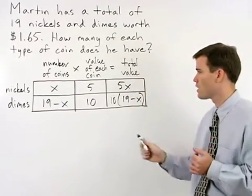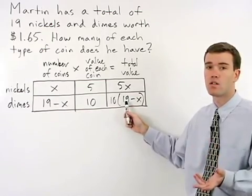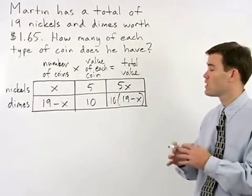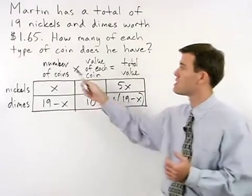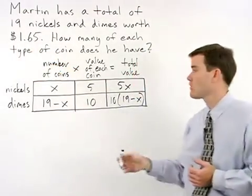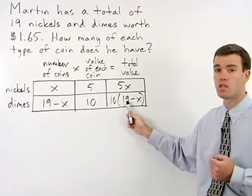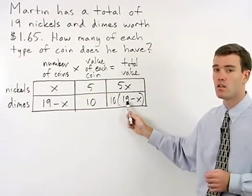So what do we know about the total value of our nickels and the total value of our dimes? Well, we know that the total value of all of our coins is $1.65. So if we add the total value of our nickels plus the total value of our dimes, that should equal $1.65.